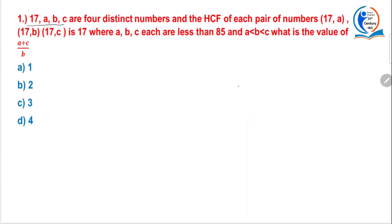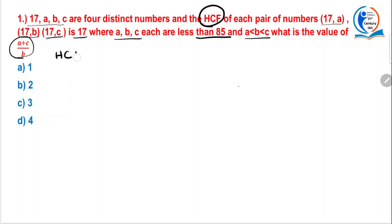17, A, B, C are 4 distinct numbers and the HCF of each pair of numbers 17A, 17B, 17C is 17, where A, B, C each are less than 85 and A is less than B is less than C. What is the value of A plus C by B? So what is the meaning of HCF? First you have to know — everybody knows the full form: highest common factor. But what is the meaning?